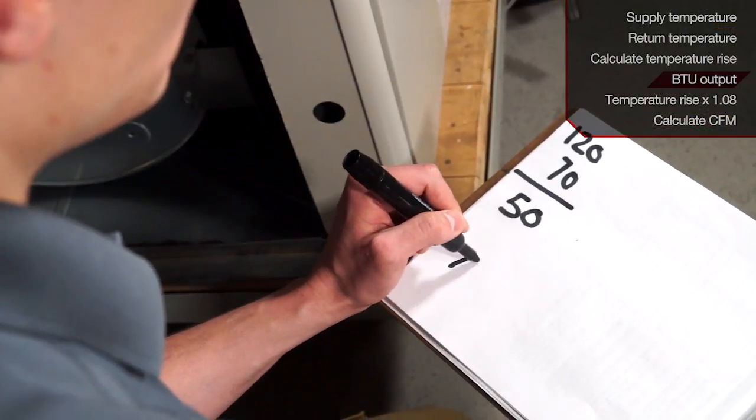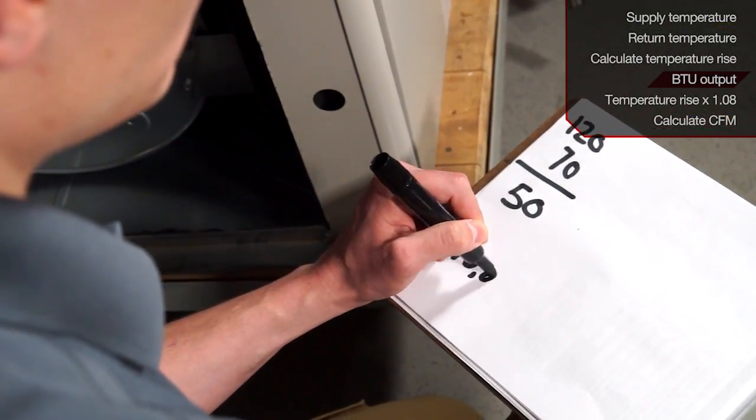The next step that you will do is find your BTU output of the furnace. This information can be found in the tech spec. Write that number down.